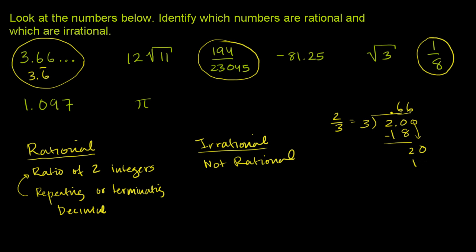6 times 3 is 18. Subtract, you get a 2. Bring down another 0. So 2 thirds equals 0.66, and it keeps on going, which equals 0.6 repeating. So this 3.66666, we could write as 3 plus 2 thirds, or 3 and 2 thirds.